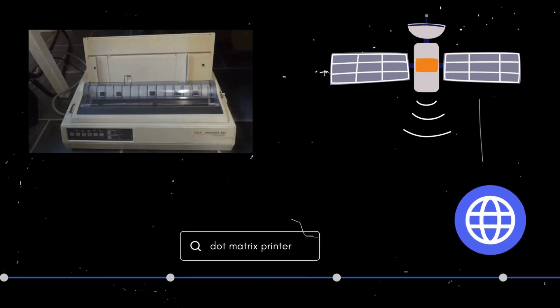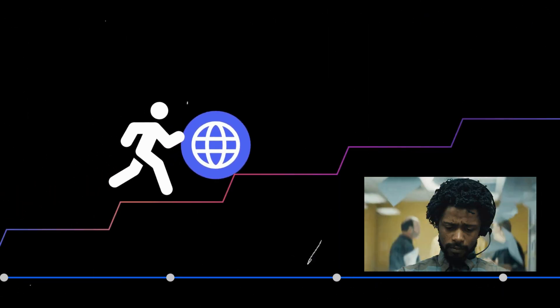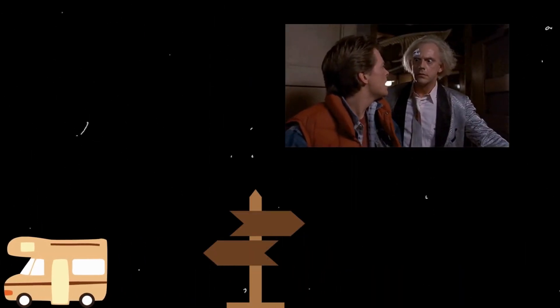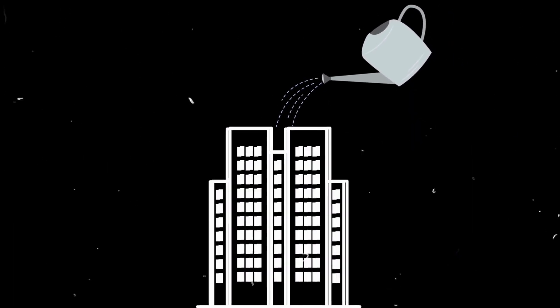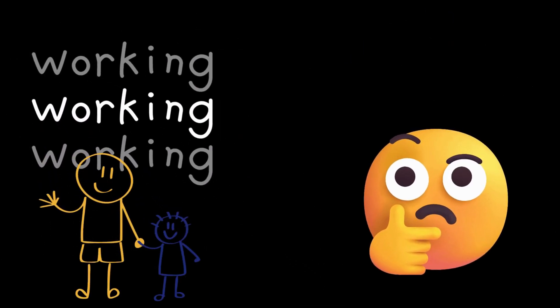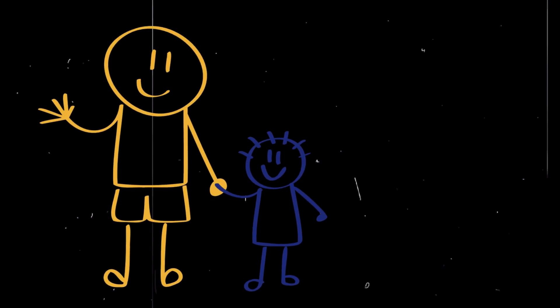From dot matrix printers to the internet, the way we work has been on a steep trajectory of transformation. We take a trip back to the future and the technology that shaped the office as we know it today, and the innovation on our future horizon. It's work life, but not as we know it.